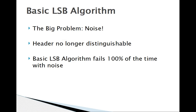The basic LSB algorithm presents one main problem: noise. When noise is added into the original image, the header becomes corrupted and the decoder is no longer able to determine the X, Y, Z dimensions of the hidden image or how many bits per byte were even encoded. So the basic LSB algorithm fails 100% of the time with noise when any part of the header gets corrupted.